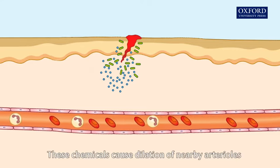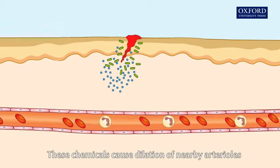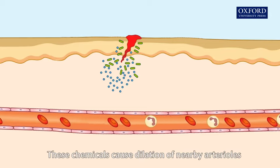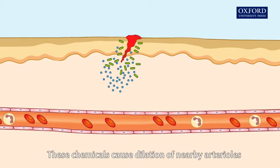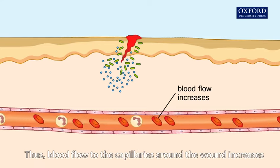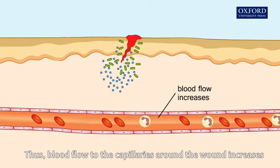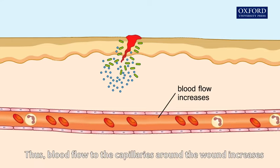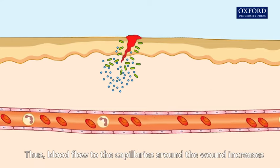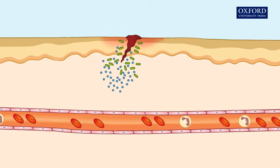These chemicals cause dilation of nearby arterioles. Thus, blood flow to the capillaries around the wound increases, and the wound becomes red and hot.